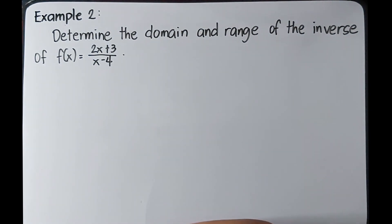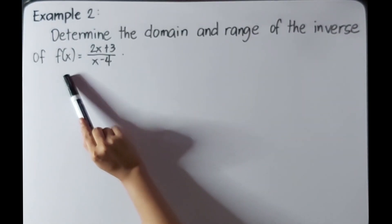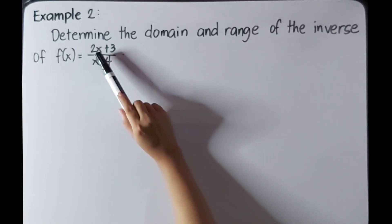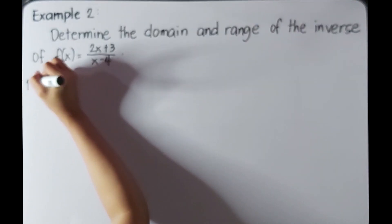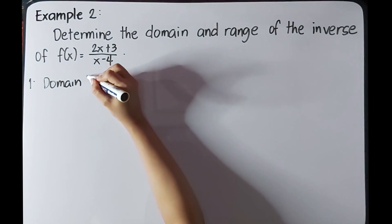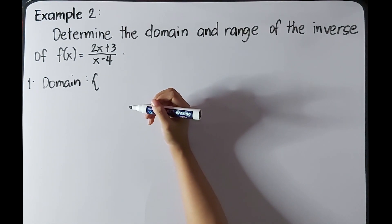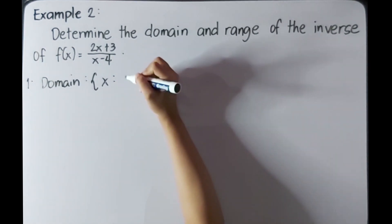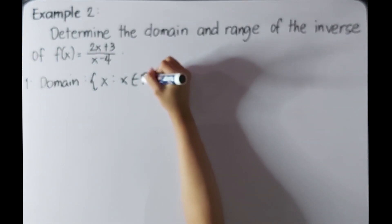For our second example: determine the domain and range of the inverse of f(x) = (2x + 3) / (2x - 4). First, we need to get the domain of this given rational function, since that is also the range of its inverse. The domain is x such that x is an element of real numbers except for its restriction.